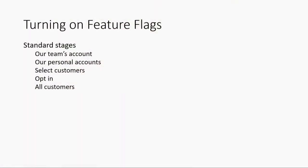To turn on feature flags, we have a standard process that we use. We call this stages. We have two separate concepts: rings and stages. Rings are for deployment; stages are for feature flags. Stages are all about disclosure or exposure. Our stages are our team's accounts and our personal accounts — our team's account meaning MSInge. There's a lot of stuff we deploy that you don't see because the only place it's turned on is MSInge.